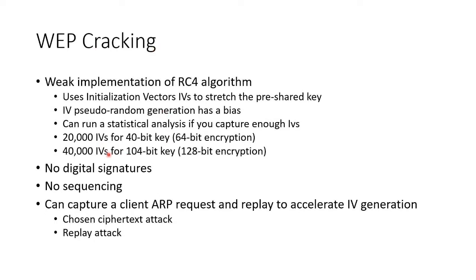The thing about WEP is there are no digital signatures, no sequences, and no timestamps. This means if we capture one encrypted ARP packet and replay it at an accelerated rate, we can force the WEP access point to create initialization vectors rapidly. We can then quickly capture all the data we need to crack the key. In cryptography, this is called a chosen ciphertext attack.